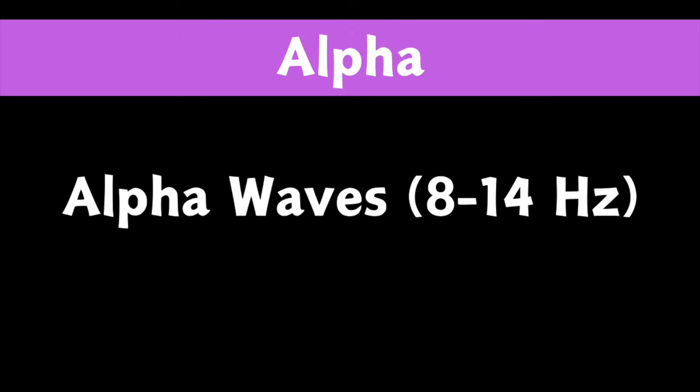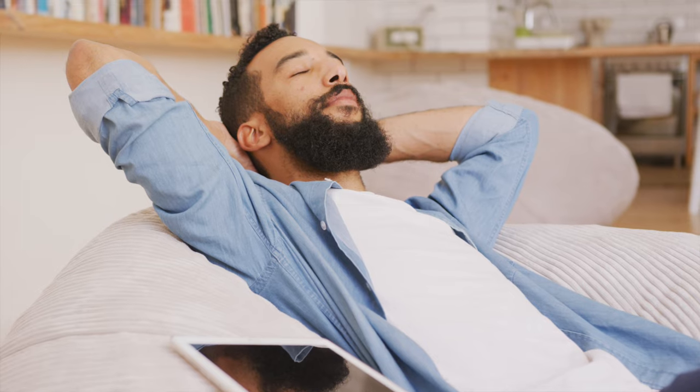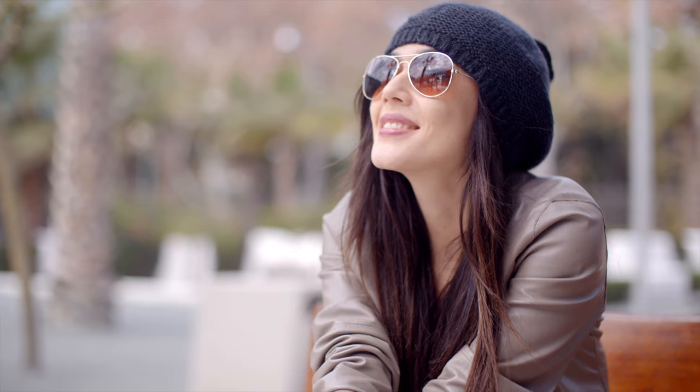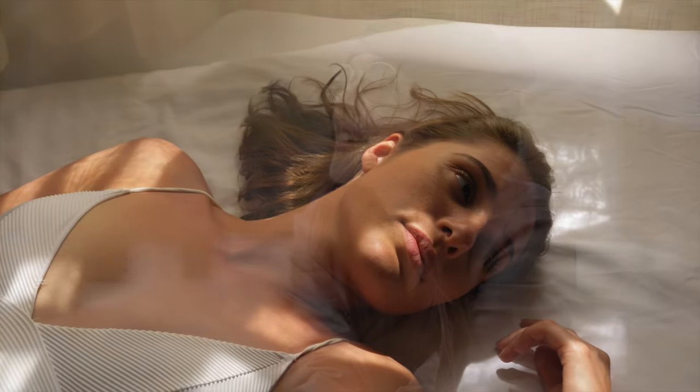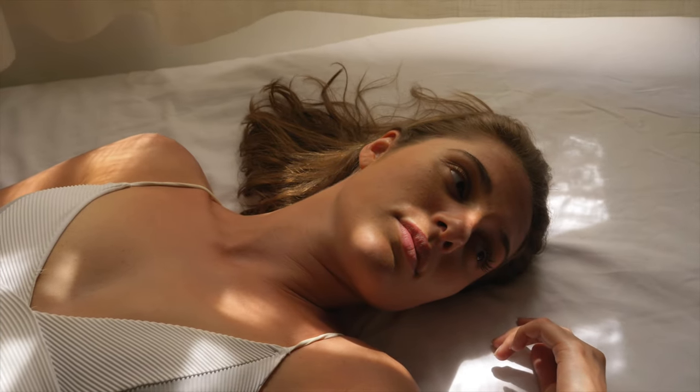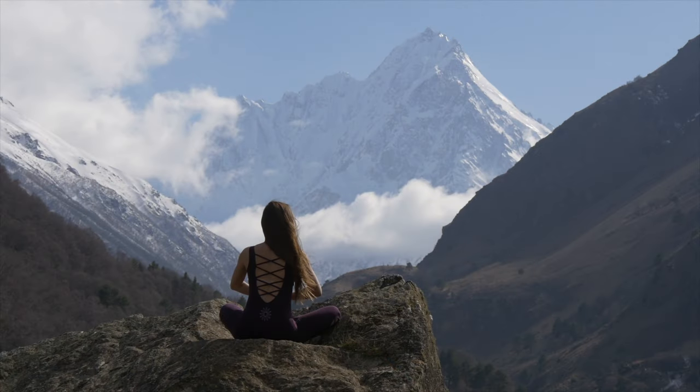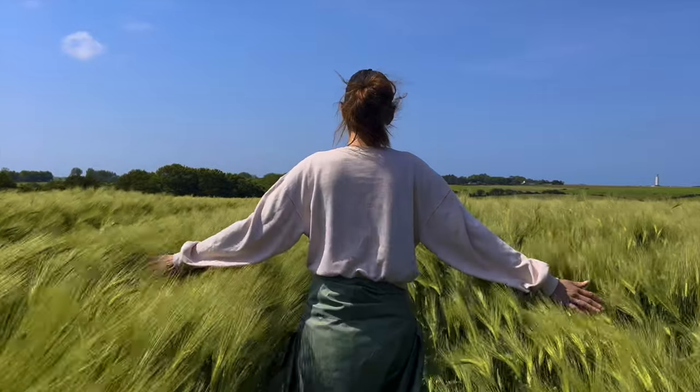Alpha waves are dominant in a relaxed and awake state, typically with closed eyes. They are more prominent when you are physically and mentally at rest, but still alert. Alpha waves are associated with a state of calmness, relaxation, and mental clarity. They are often observed during light meditation, a relaxed walk, or when closing your eyes and taking a break. After finishing a task, if you close your eyes and take a few deep breaths to relax, you may enter a state with increased alpha wave activity.